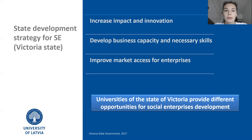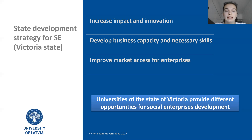Regarding developing business capacity and necessary skills, they also have three sub-points. The first one is to provide social enterprises with skills and capabilities in order to prepare them for investment and tender opportunities. Secondly, it is to support intermediary services that help the social entrepreneurship ecosystem. And thirdly, enlist support of the government in the sector development.